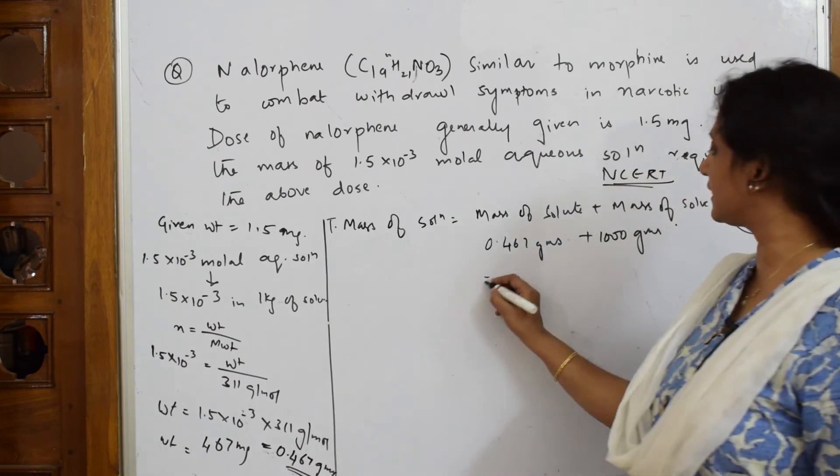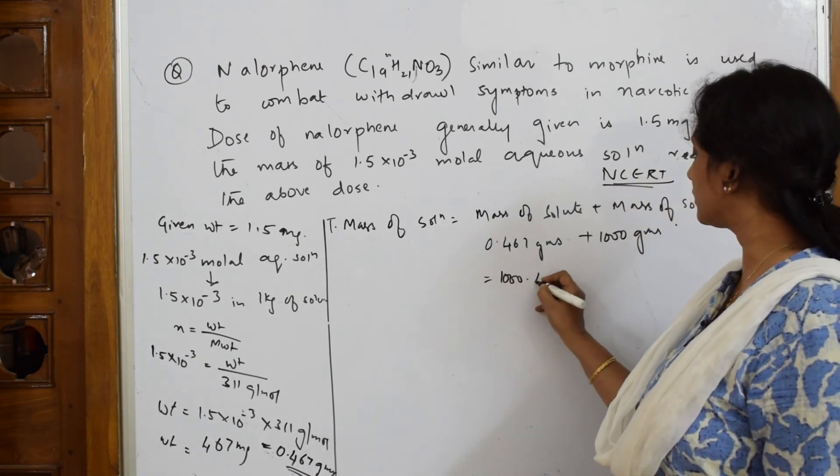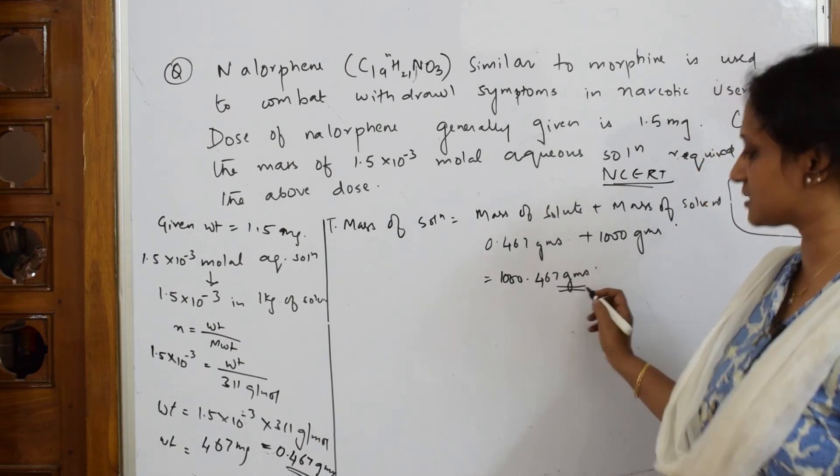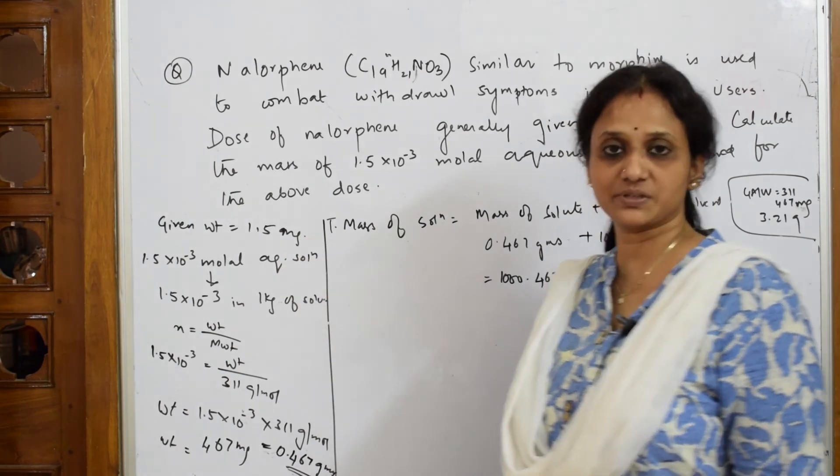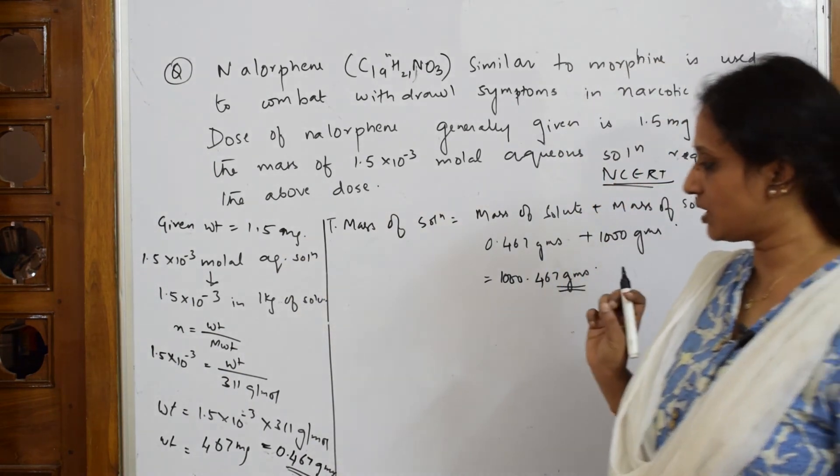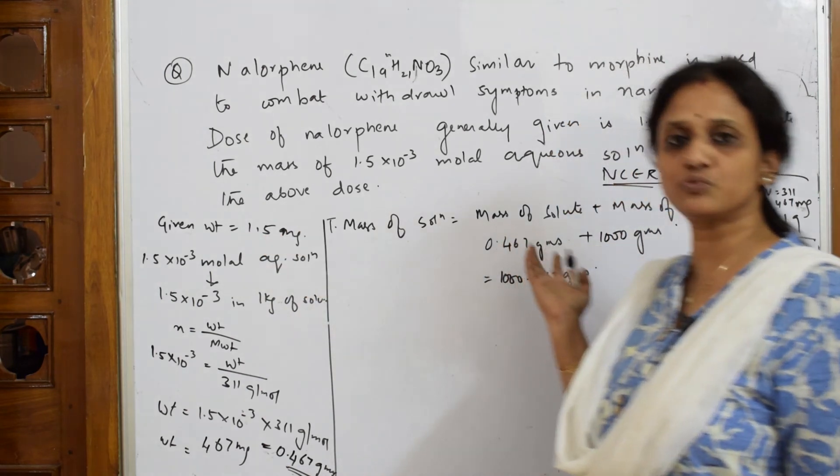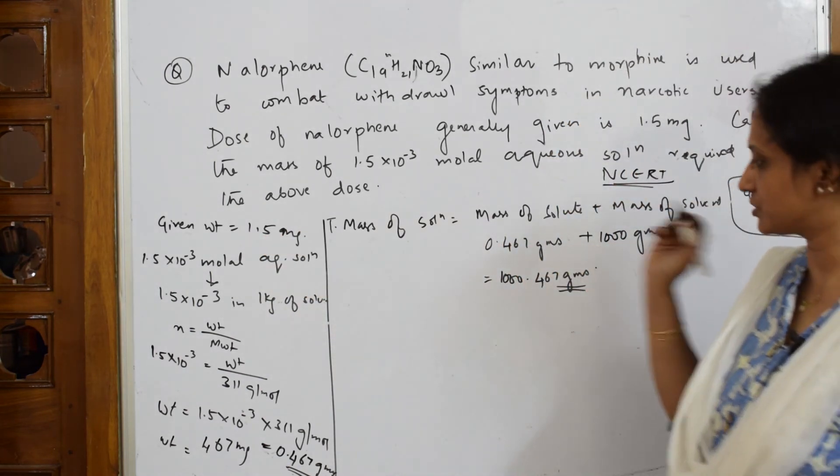When I add I get 1000.467 grams. Observe everything is in grams. Now I have to prove if it is 1.5 mg, how much will be the mass of that particular solution.